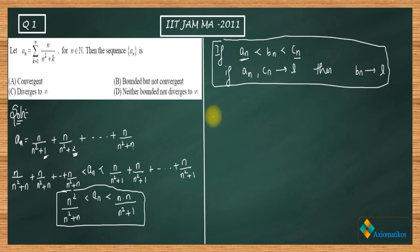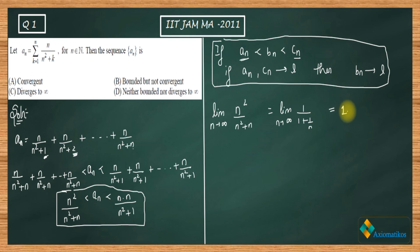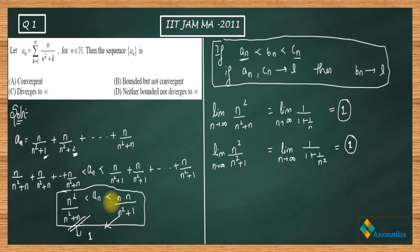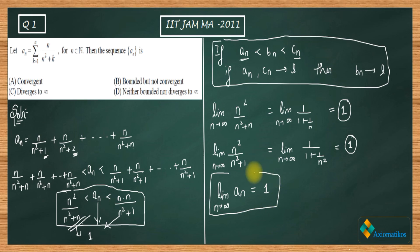Let us find the limits of both bounds. For n²/(n²+n), dividing by n² gives 1/(1+1/n), which goes to 1. For the upper bound n²/(n²+1), we get 1/(1+1/n²), which also converges to 1. Since both bounds converge to the same limit, a_n must also converge to 1 — that is, the limit as n goes to infinity of a_n equals 1.